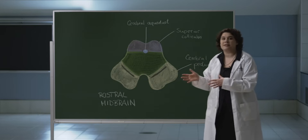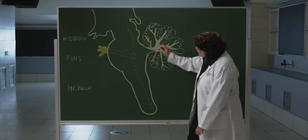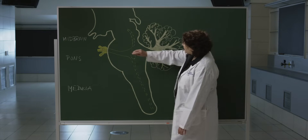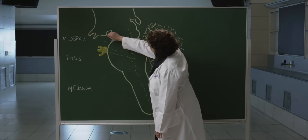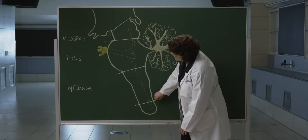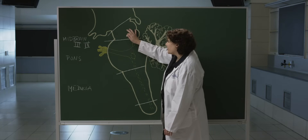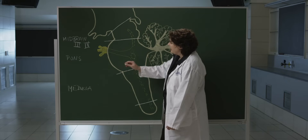In this diagram we're going to look at the cranial nerves associated with the different parts of the brainstem. Here is the midbrain, just caudal to the diencephalon; here is the pons and this is the medulla. Cranial nerves three and four emerge from the midbrain and have their respective nuclei located within the midbrain. There is another nucleus in the midbrain associated with cranial nerve five, which we'll get to in a moment.